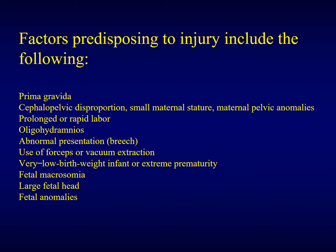If the baby is a very low birth weight infant or is extremely premature, if he has fetal macrosomia or a big head, and fetal anomalies — if this baby has any of the neural tube defects, if he has problems with the cord or masses.